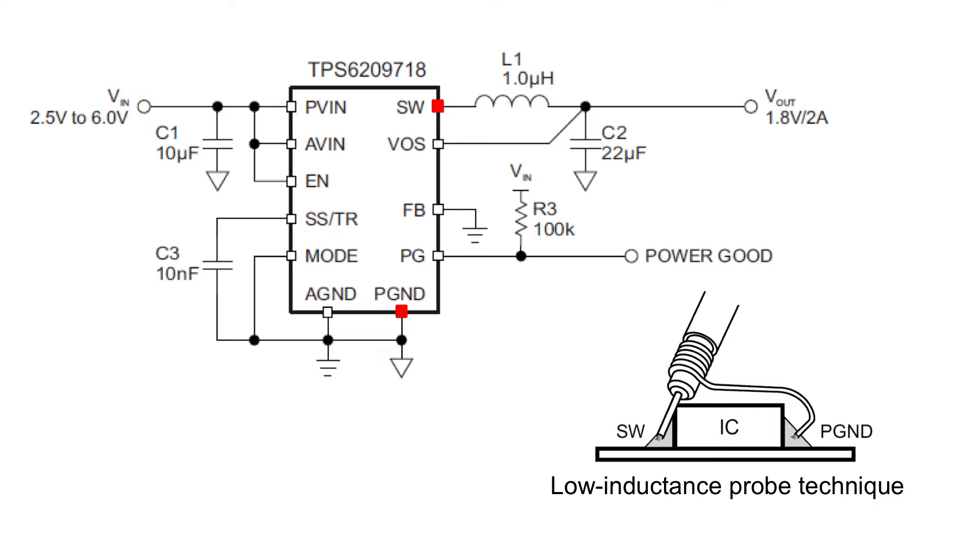Then instead of the normal scope probe we want to use a low inductance probe technique where we remove the long ground clip and replace it by a ground spring. That way we reduce the noise being picked up from the circuit. And of course the scope tip we connect directly to the switch node of the circuit.